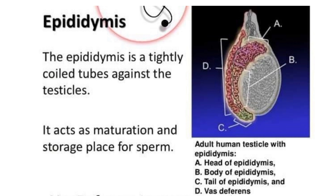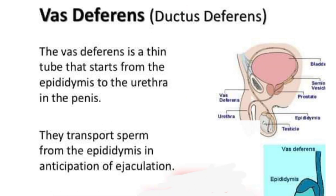During sexual arousal, contraction forces the sperm into the vas deferens. In the given diagram you can see the adult human testicle with epididymis, which contains the head, body, and tail of the epididymis, and the vas deferens. The vas deferens, also called the ductus deferens, is a long muscular tube that travels from the epididymis into the pelvic cavity to just behind the bladder. It transports mature sperm to the urethra in preparation for ejaculation.